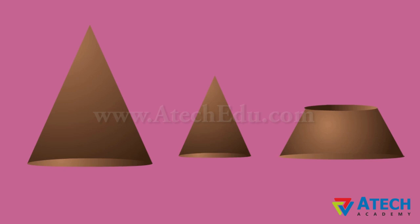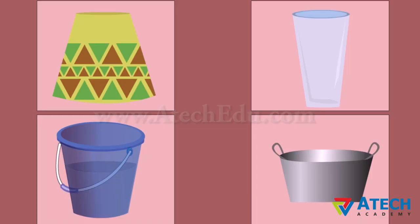This object is known as a frustum of the cone. We can find many examples in our daily life, like a cap, bucket, glass, and cooking utensils.